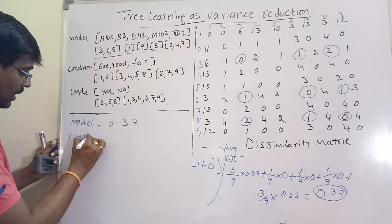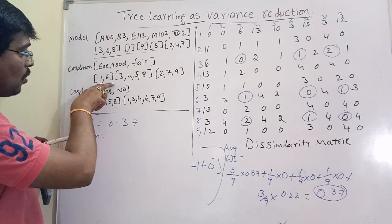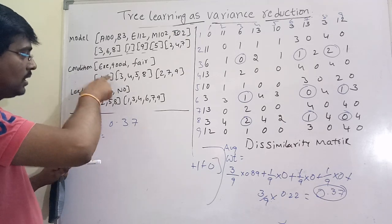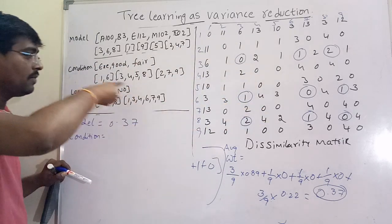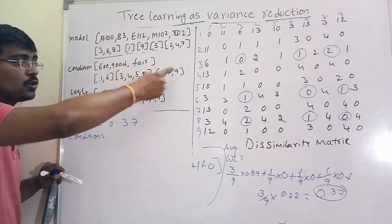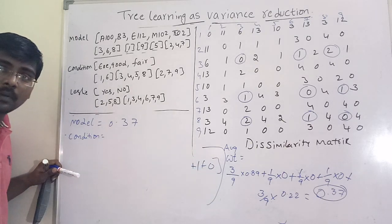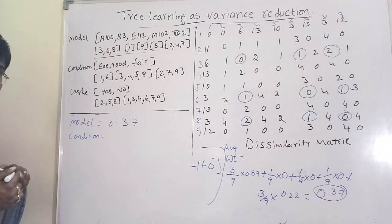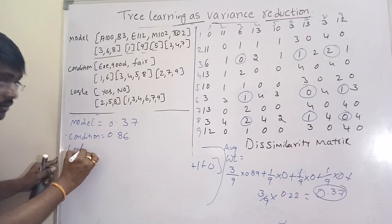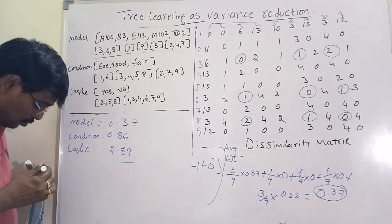Similarly, for the condition feature, apply the same procedure — forming all combinations within each branch and calculating 1/d² times the sum of dissimilarities — getting a value of 0.86. For the Lesleine feature, applying the same procedure gives a value of 2.89. Now, which feature do we select? The less value means more similar, so we select the feature with the lowest average weighted dissimilarity.